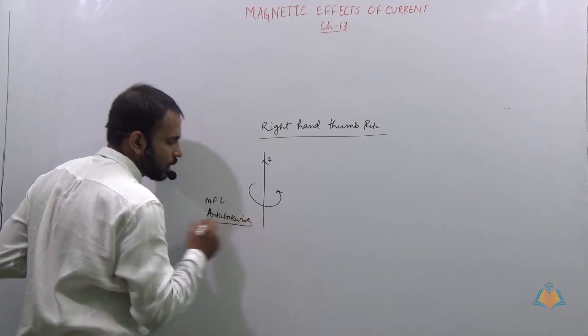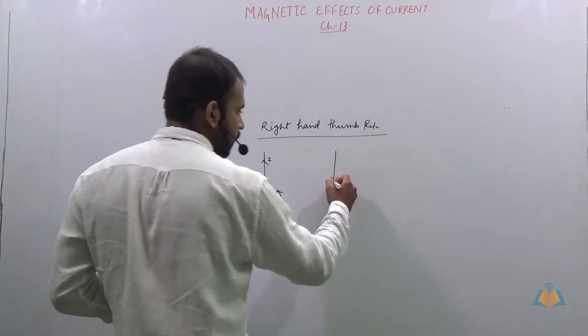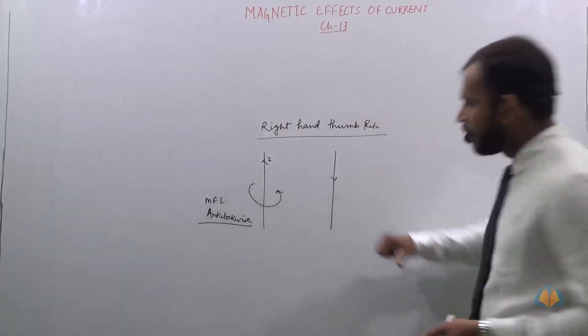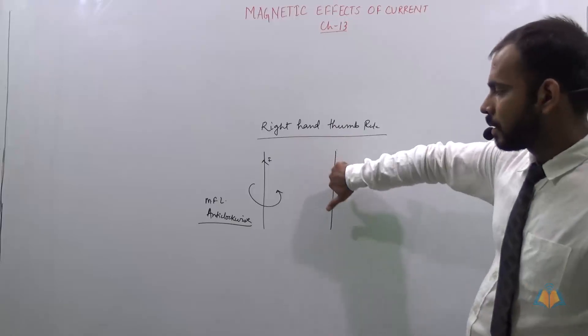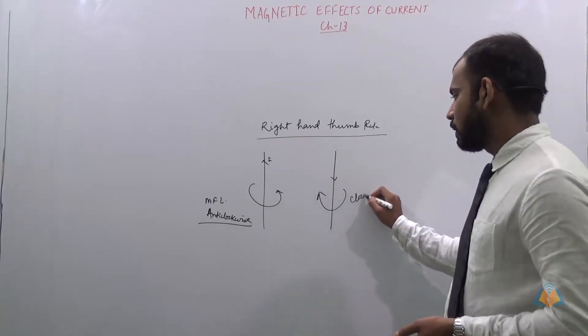Let us see whether it changes when we move down. A straight current carrying conductor moving downwards. It is moving from here to here which is clockwise.